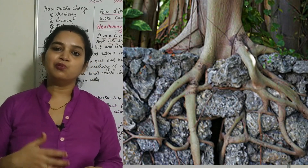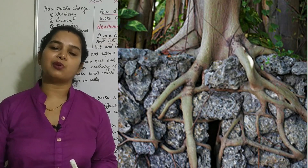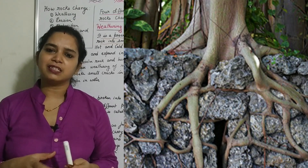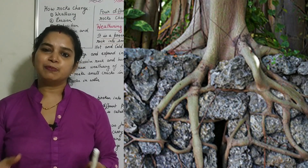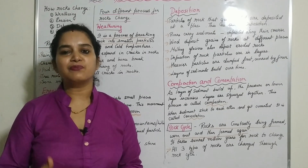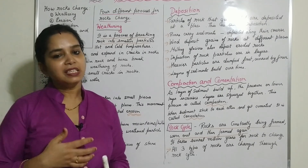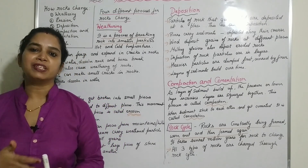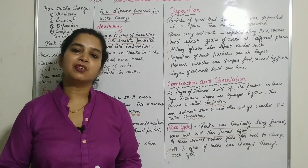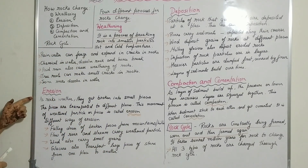The roots of big trees grow deep into the soil, and in the process they break big rocks into smaller particles. This is another way weathering of rocks can occur. Weathering can happen in different ways, and it takes a very long time — it can take many years for weathering of rocks to happen.